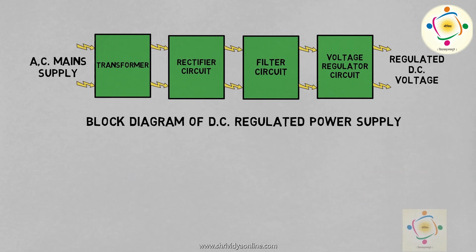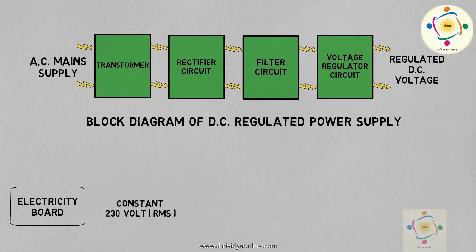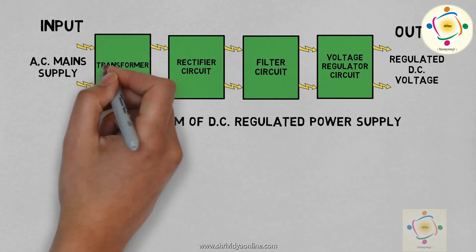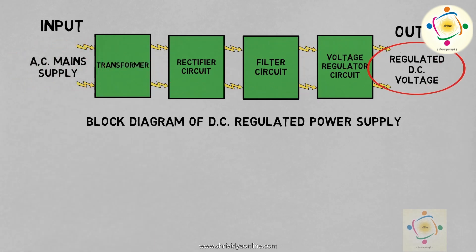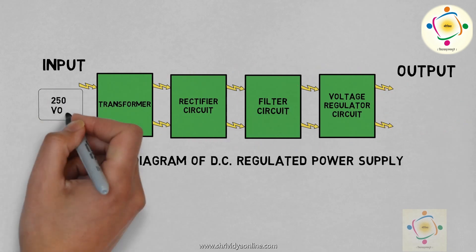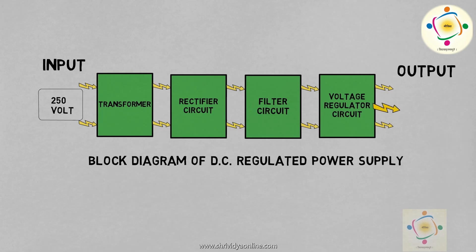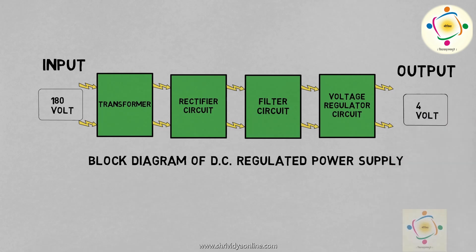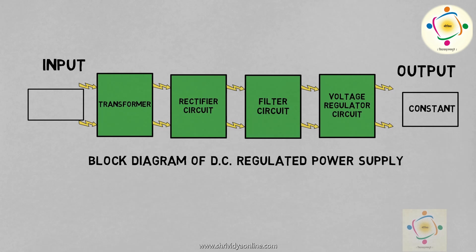Another problem is that it is expected that the electricity board should supply a constant 230V supply. But there are a lot of problems of loading and distribution, due to which at the end we do not get a constant supply. This means if the input voltage changes, the output voltage also changes. For example, if it is increased to 250V, then we will get 5.5V at output. If input decreases to 180V, then at output we will get 4V. However, our aim is that we want constant output even if the input changes. To solve this problem, we need our next component — the regulator.